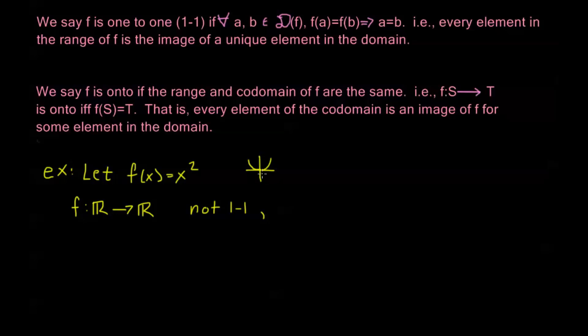So my range is going to be all of these values that are 0 or greater than 0. So none of these negative values are in my range, but they are in my codomain. So my range and my codomain are not the same. So this is not onto.